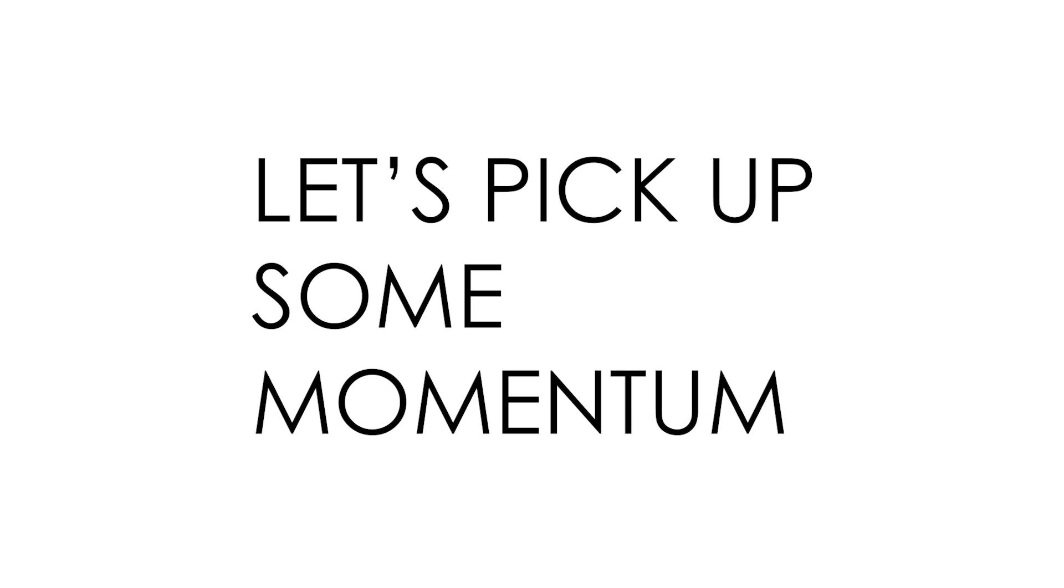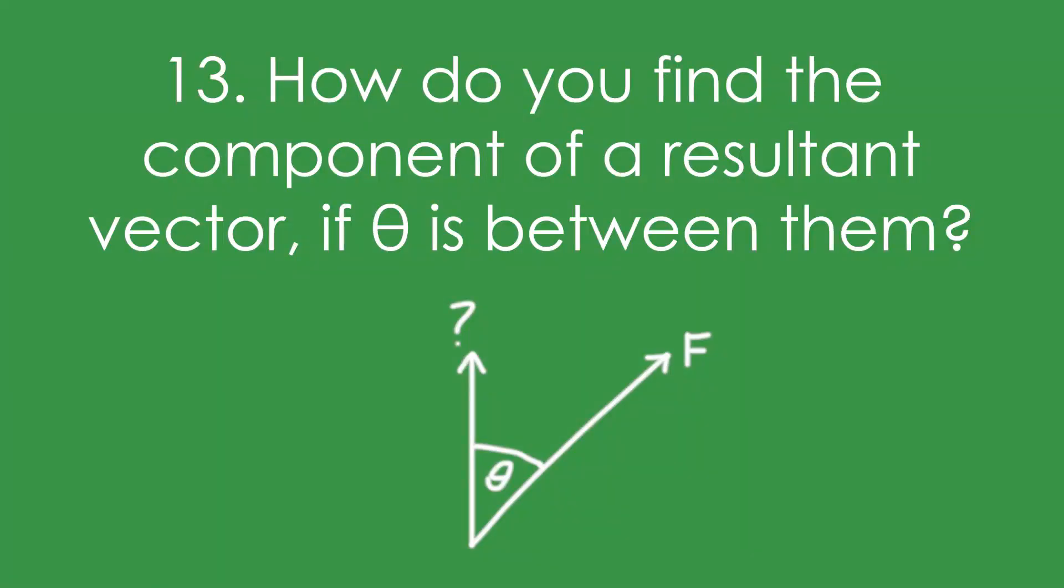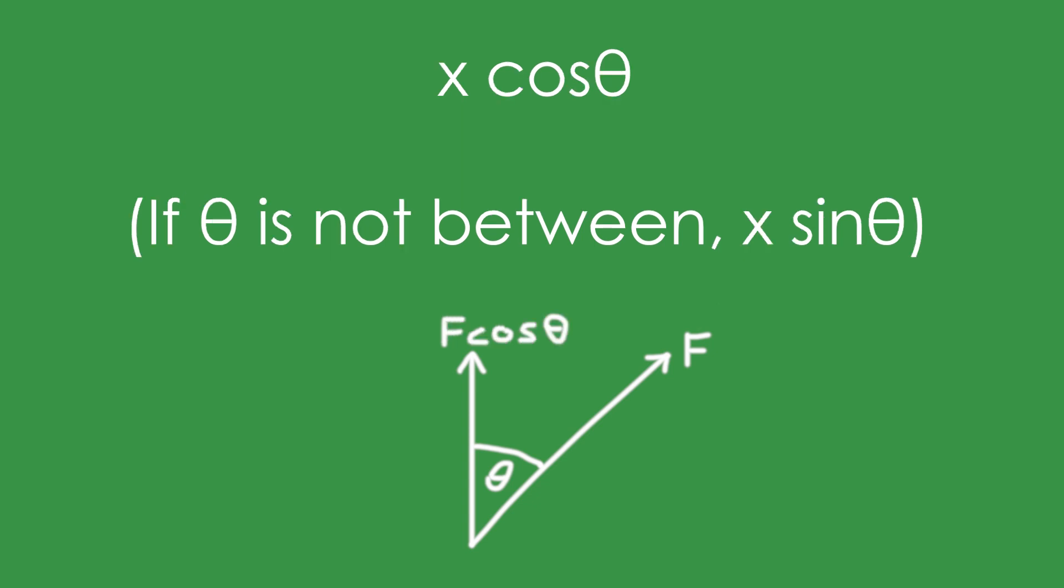Let's do some A-level only questions. 13. How do you find the component of a resultant vector if the angle theta is between them? You times by cos theta. If the angle isn't between the two vectors, you times by sine theta instead. Check out my easy vectors trick video.